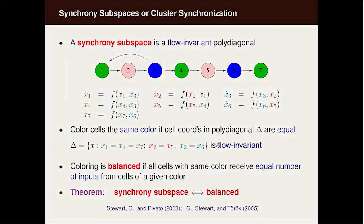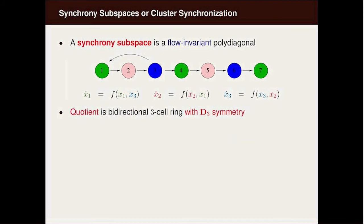If you color a network as we have here with the nodes, we call the coloring balanced if any two nodes with the same color receive equal numbers of input from cells of a given color. Notice every green receives blue input, every red receives a green input, every blue receives a red input. The theorem is that you get a synchrony subspace or clusters given by the colors if and only if this network is balanced. This is a nice theorem because it says in the end you don't have to look at the differential equations, it just comes from combinatorial features of the network that you get these flow invariant subspaces.